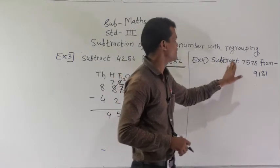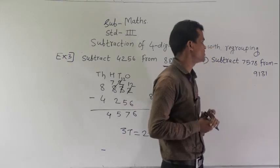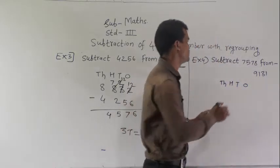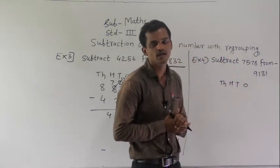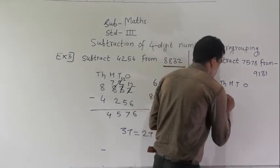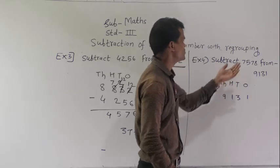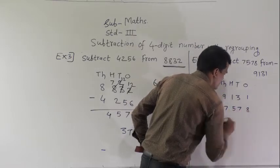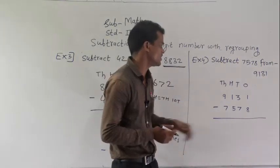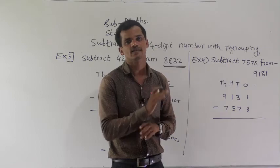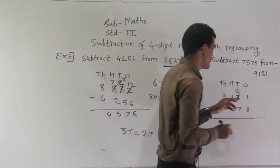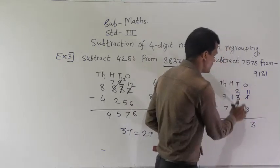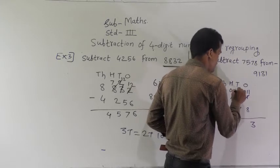Next example, example 4: subtract 7,578 from 9,131. First, arrange those numbers into columns and then subtract. 9,131 is the bigger number, so write that number on top and under that number write the smaller number 7,578. Starting from the ones place: 1 minus 8 is not possible because 8 is greater than 1. Regroup this 3 — write 2 here and write 11 in the ones place. 11 minus 8 is possible: 11 minus 8 equals 3. Then 2 minus 7 is not possible, so write 0 here and 12 in the tens place.